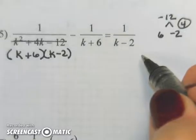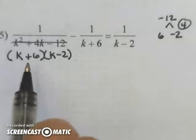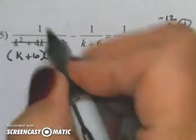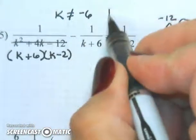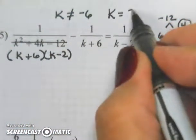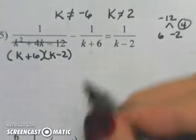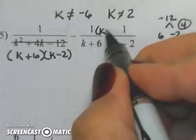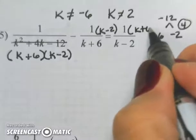But I also want to make a note of what my denominator cannot be. I cannot have a 0 right here. So k cannot equal negative 6, and k cannot equal 2. Those are my two restrictions. So this problem needs a k minus 2, this one needs a k plus 6.